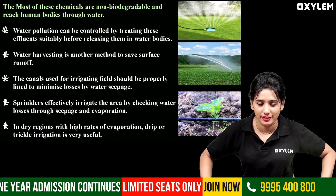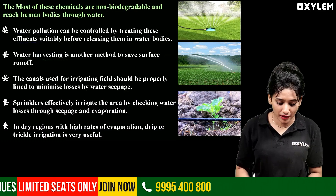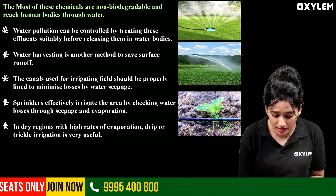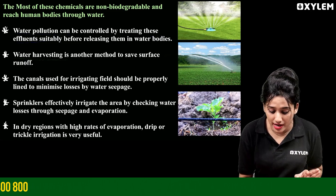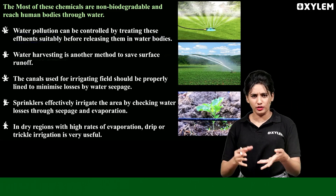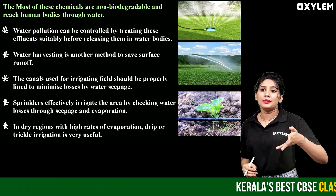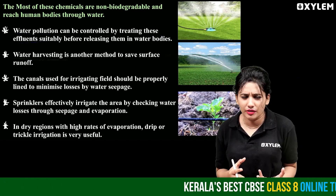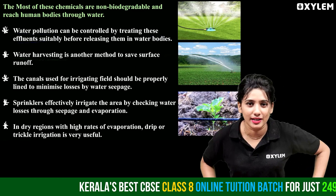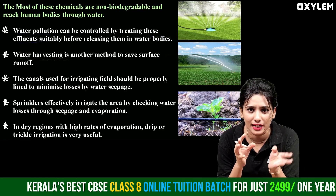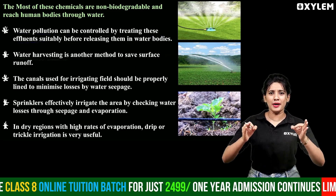This is the third method: water conservation. The canals used for irrigating fields should be properly lined to minimize losses by water seepage. Water seepage means leakage. We need to use the canals for irrigation and agricultural production, and we need to remove the leakage.